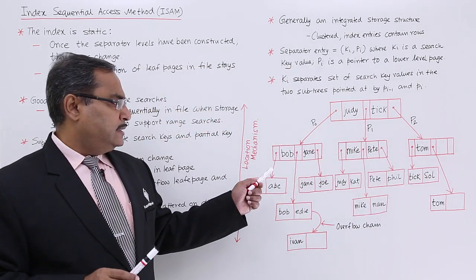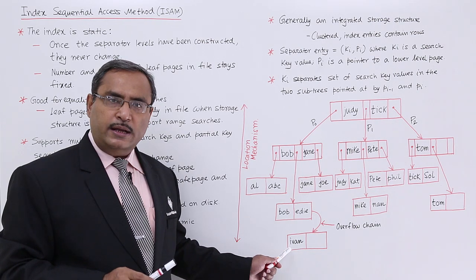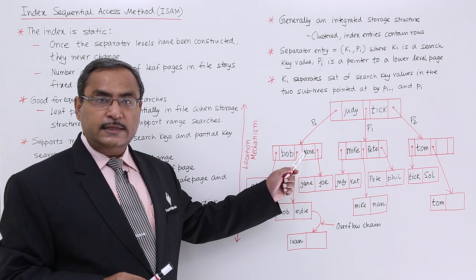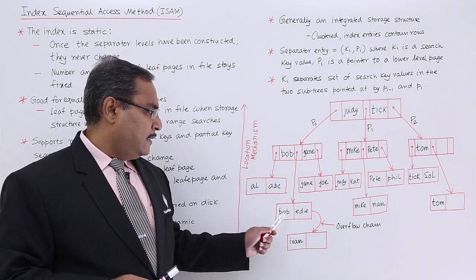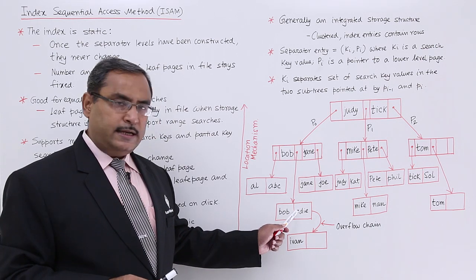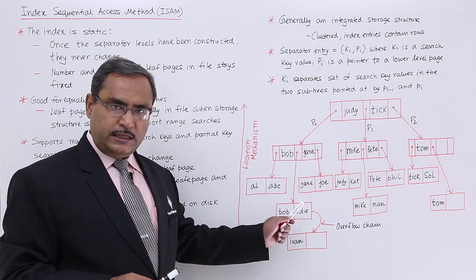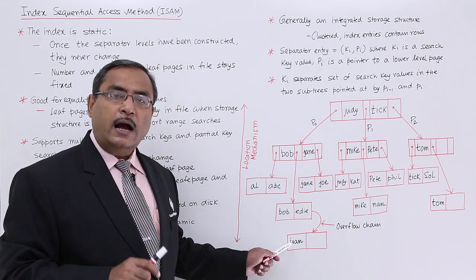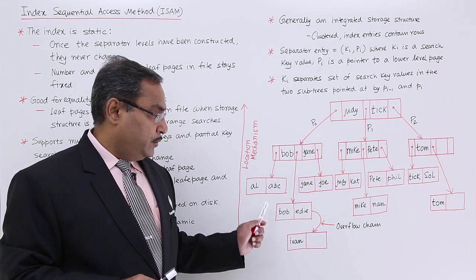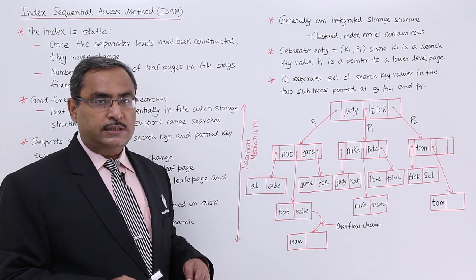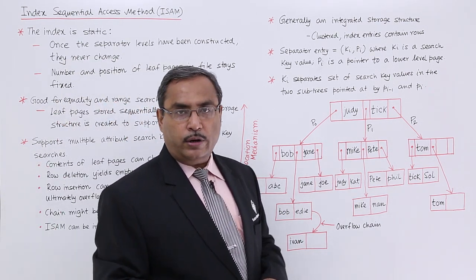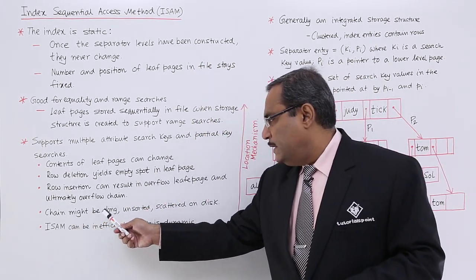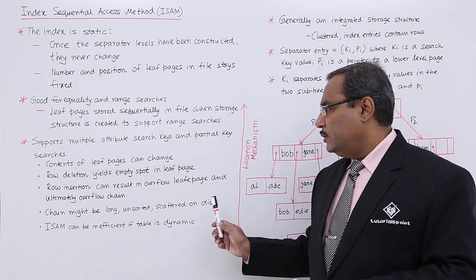Now, here you see let us suppose I want to insert one name say evan. I will be greater than B and I will be lesser than gen, so it will be coming down to this. I is greater than B, I is greater than ed, but there is no space in this particular leaf node. One overflow chain will be there where I will be keeping this evan here. In this way we are having overflow chains whenever required. It will be inserted accordingly. So it has been mentioned here.